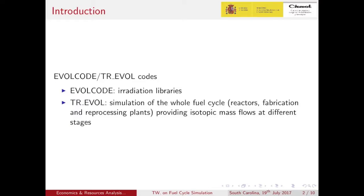The nuclear fuel cycle is simulated by a transition-evolution code. Different kinds of reactor technologies and operational parameters are accepted, as well as the surrounding facilities, fabrication and reprocessing plants. The results are saved in a series of buffers that store isotopic composition per year at different stages of the cycle defined in the input file.